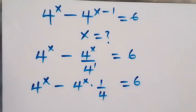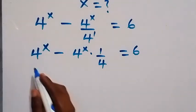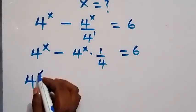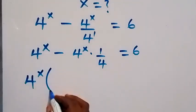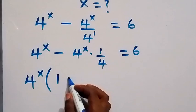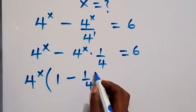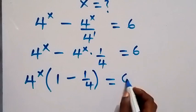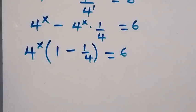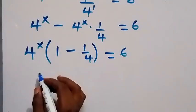Which equals 6. From here, we factor 4 raised to power x out from this side. We have 4 raised to power x, then in bracket: 1 left here, then minus 1 over 4 left here, which equals 6. And from here, this bracket is the same thing as 3 over 4.